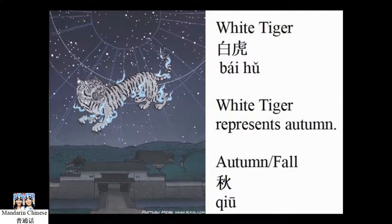The White Tiger is the constellation that represents autumn. White Tiger — 白虎. Autumn or fall — 秋.